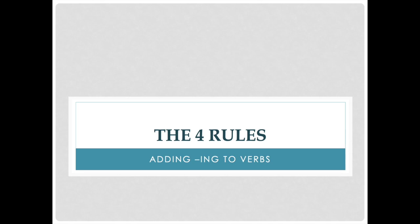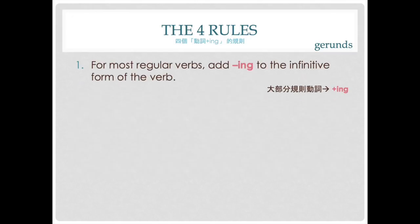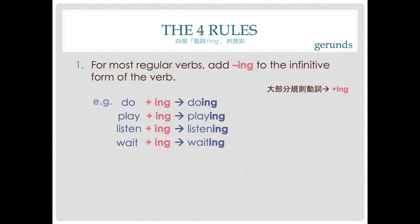Let's start with the four rules of how to add -ing to verbs. Rule number one: for most verbs, you just add -ing to it. For example, 'do' plus -ing becomes 'doing'; 'play' plus -ing becomes 'playing'; 'listen' plus -ing becomes 'listening'; 'wait' plus -ing becomes 'waiting'.